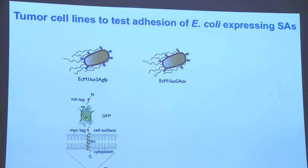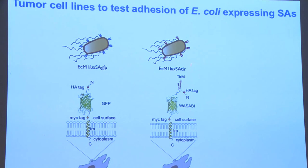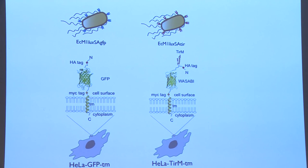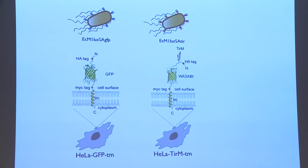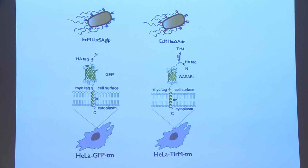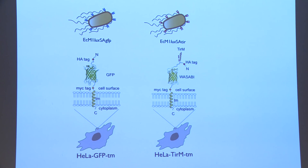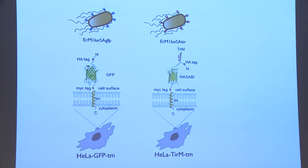We wanted to test this with cells. We had nanobodies against GFP and against the translocated intimin receptor (TIR) — an antigen not found in HeLa or human cells. We made stable transfectants of HeLa cells expressing on the surface the antigens recognized by the adhesins: GFP displayed on the surface anchored by a transmembrane domain, and TIR anchored to another fluorescent protein not cross-recognized by the anti-GFP nanobody.